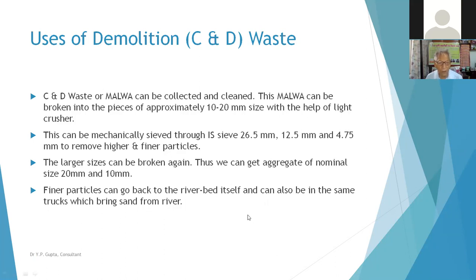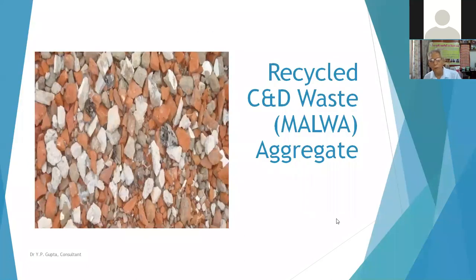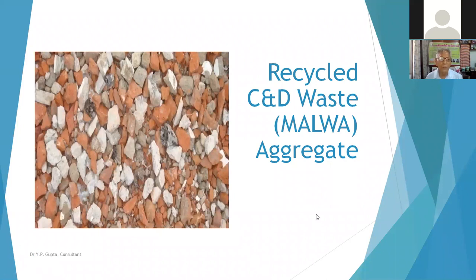These aggregates can be used for filling, road embankments, or returned to river banks — since we collect sand from river beds, this material can go back. The biological properties must be checked before dumping near rivers. After crushing the Malwa or C&D waste, you can see the typical aggregate shape produced, showing multiple colors of bricks, concrete, and other materials.